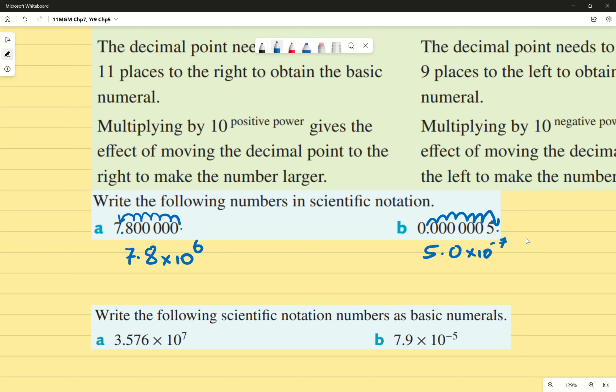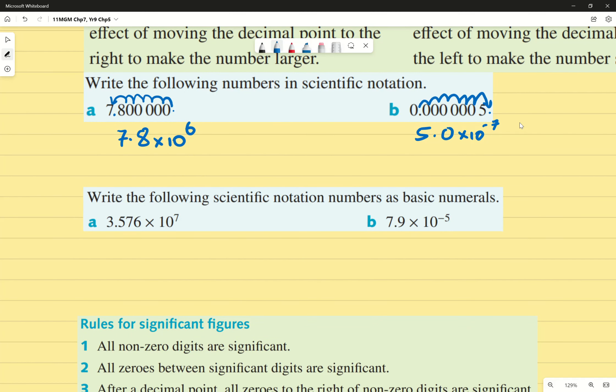Going backwards. If we are writing the following scientific notations as basic numerals, it means that we're trying to get those zeros back. 10 to the power of 7 means it's an extremely large value. So I'm going to write 3, 5, 7, 6, knowing full well that the decimal place is between the 3 and the 5. I'm going to move it 7 times. If I'm getting to a large number, I have to move the decimal place to the right. 1, 2, 3, 4, 5, 6, 7. What do I fill in those empty gaps with? Zeroes. So my answer ends up being 3, 5, 7, 6 and then 4 zeros.